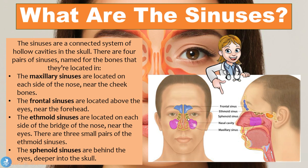Finally, we have the sphenoid sinus, located a bit more posteriorly. This is the hollow cavity found within the sphenoid bone. The sphenoid sinuses are behind the eyes and deeper into the skull, located within the sphenoid bone.